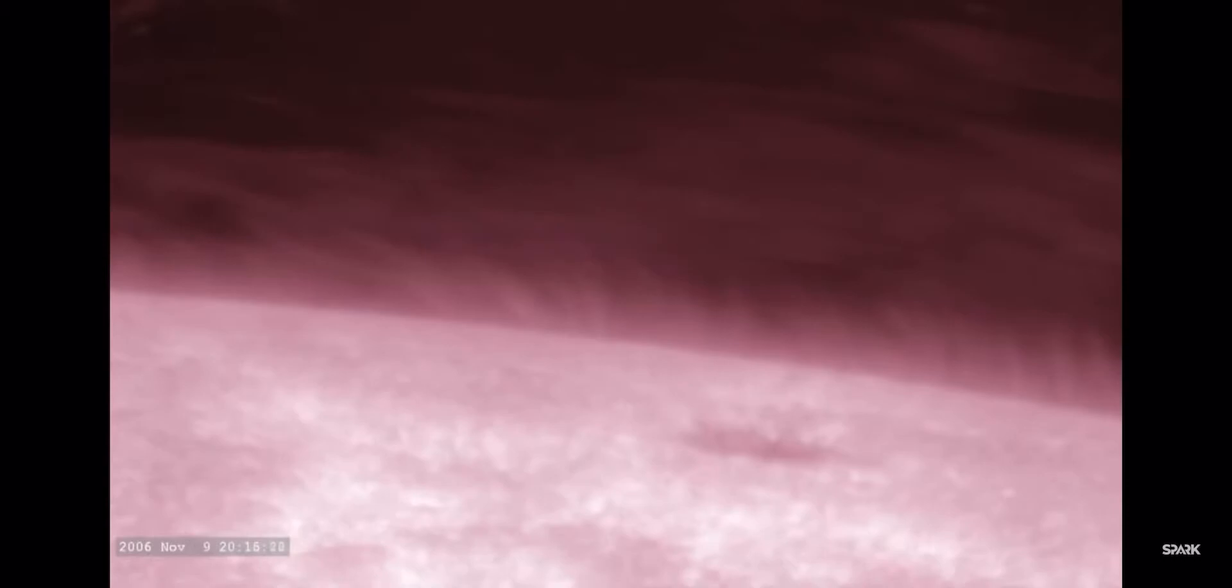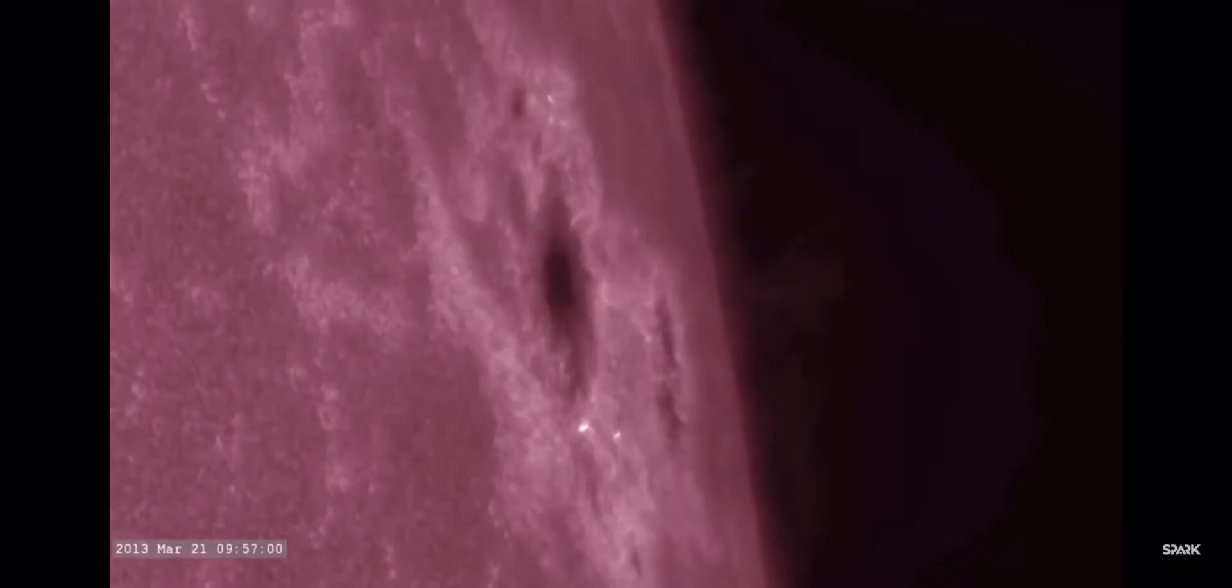This view, captured by the Hinode satellite, shows energy escaping from the vicinity of a sunspot in wavy, grass-like structures called spicules.